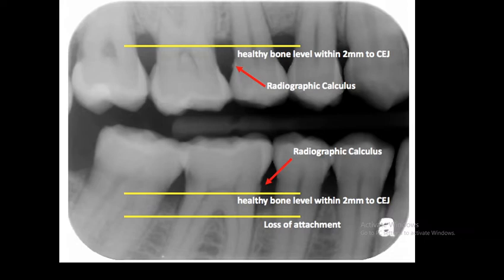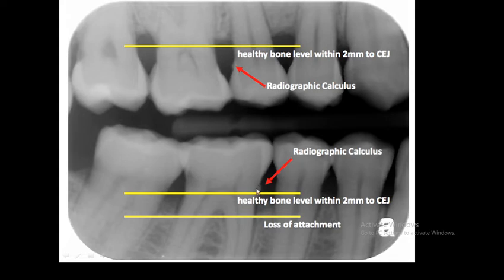Now let's look at this radiograph. Here you can see the radiographic calculus and this is the bone level. Two millimeters to the cemento-enamel junction. This is the loss of attachment shown here. This patient has very bad oral hygiene and his teeth are almost loose.